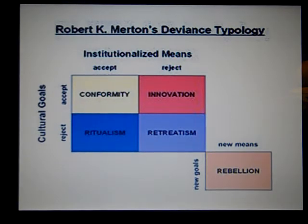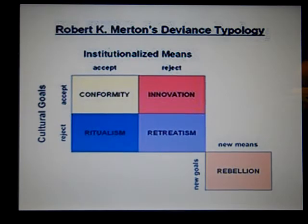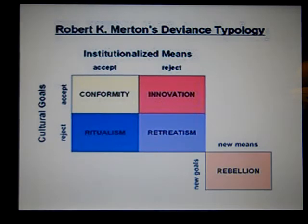Merton sets out that we have cultural goals. By definition, cultural goals are objectives that are held out as legitimate or desirable for members of a society to achieve. For example, earning money, making a substantial income, is an accepted cultural goal within our culture. Most people want to make a living, make pretty good money if not a lot of money. So we can either reject that goal or accept it.